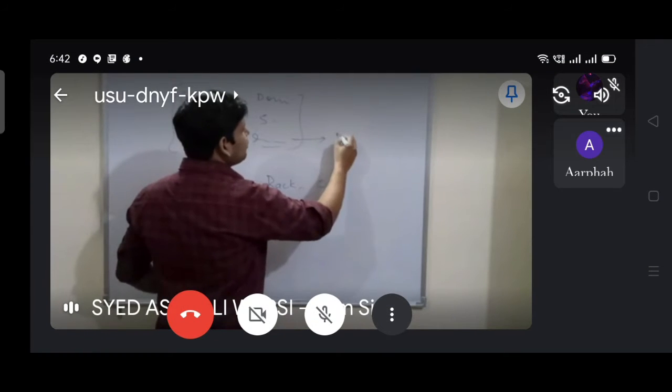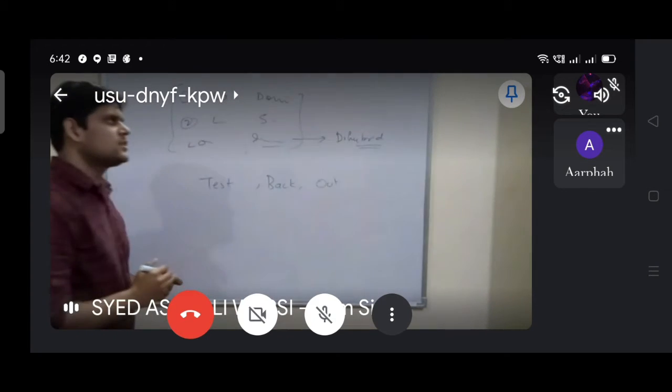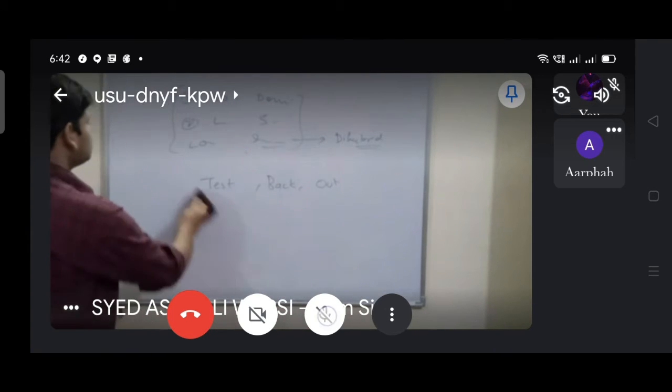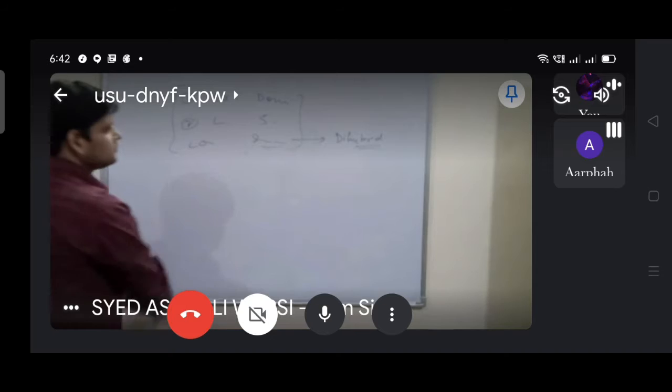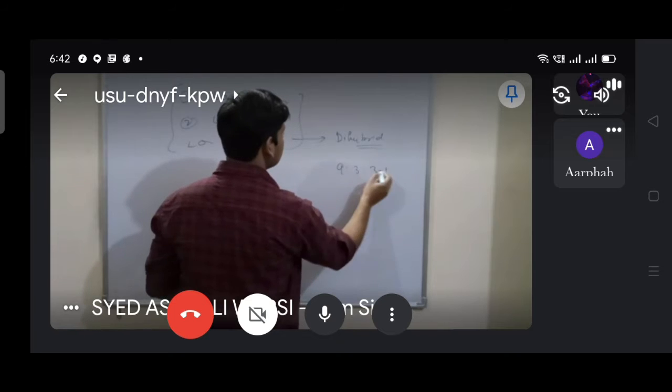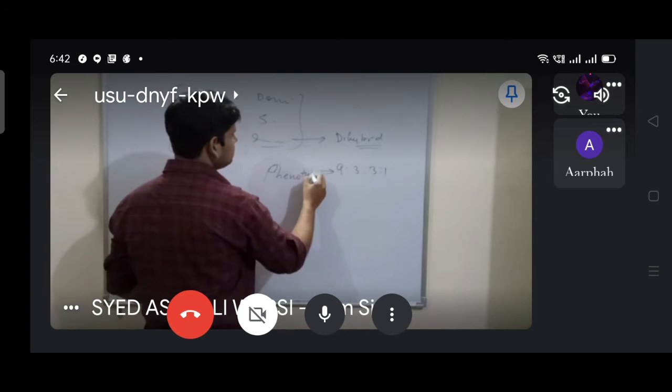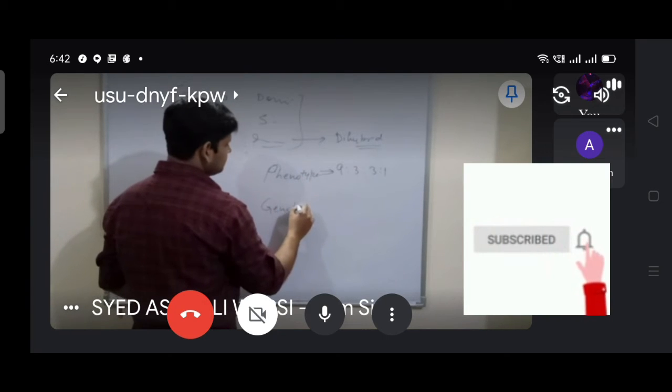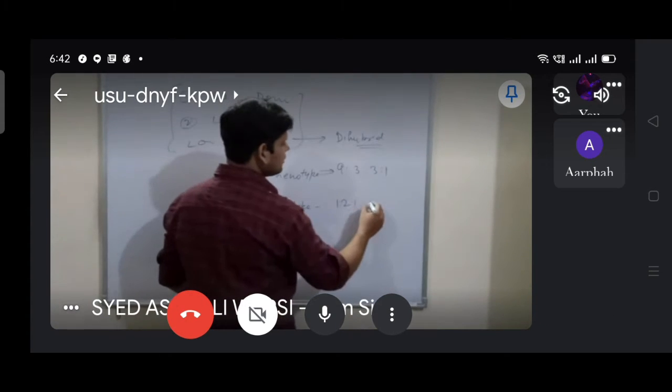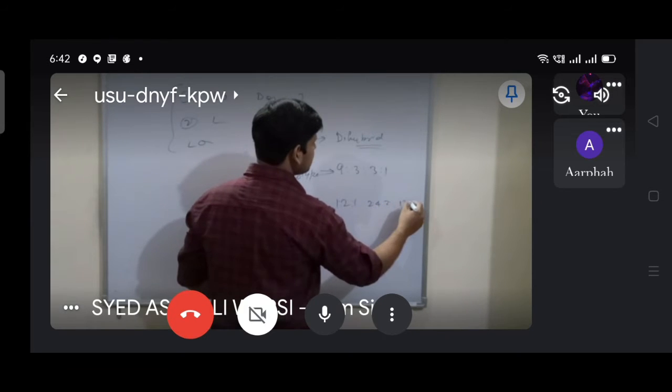In the independent assortment, we have solved the di-hybrid cross. When we solved the di-hybrid cross, we had a ratio. What ratio? 9 is to 3 is to 3 is to 1. This is the phenotype. And genotype? It was genotype RR 1 is to 3 is to 1.